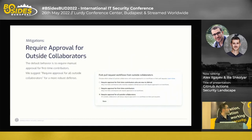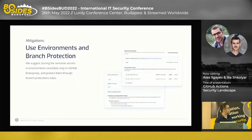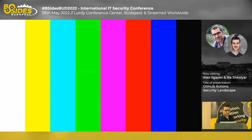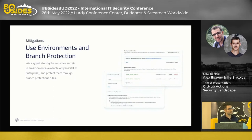Another mitigation is to require approval for outside collaborators. The default parameter is to require approval for first-time contributors — mainly applicable for public repositories. If a contributor hasn't committed code to the repository yet, a maintainer must manually allow their code to run.